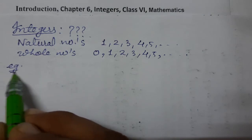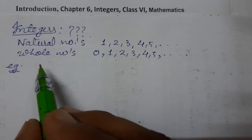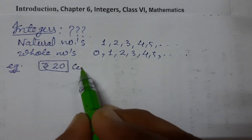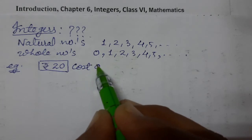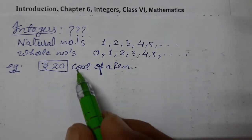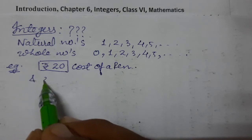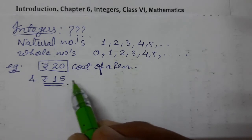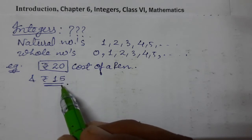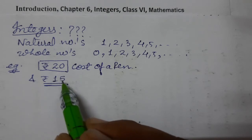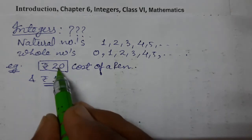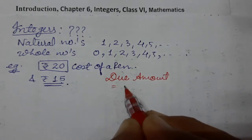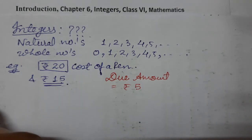Let us take one example. Suppose he goes to the market to purchase a pen, and the pen costs 20 rupees. But you are having only 15 rupees. The shopkeeper, if he knows you, will write the due amount. What is 20 minus 15? The due amount is 5 rupees.